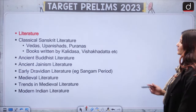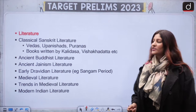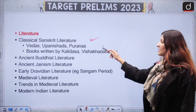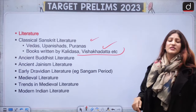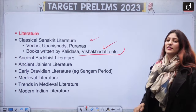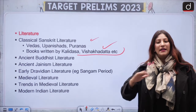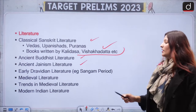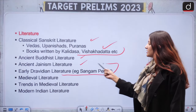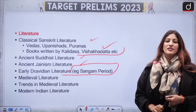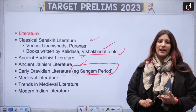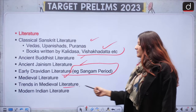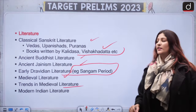Now we have Literature. Very importantly, Sanskrit literature — Vedas, Upanishads, Puranas are important — and books written by important writers like Kalidas, Vishakhadatta, Kalhana, and many others. Ancient Buddhist and Jain literature are also important. In Dravidian literature, you can get confused in the Sangam period, but do revise it repeatedly. In Medieval literature, cover the trends as well as Modern Indian literature.